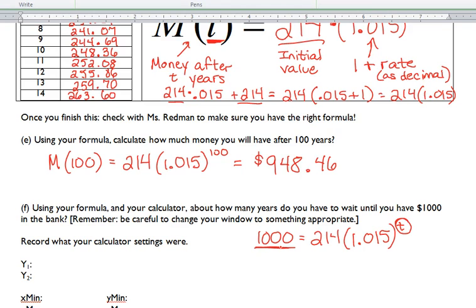Well, it is equal. Yeah, we want to get it by itself. So, what would we do first? Divide by 214. Then, what did we try and do?